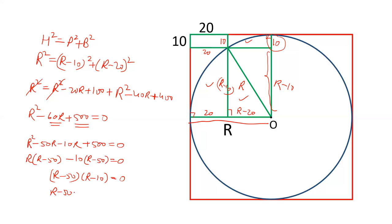So if R minus 50 equals zero, the value of R will be 50. R minus 10 equals zero, the value of R will be 10. So R is either 50 or 10. But R is at least more than 20 because this line is 20 and there is more than 20. The value of R will be definitely 50.